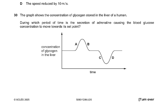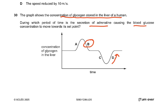Question 30: the graph shows the concentration of glycogen stored in the liver. During which period is the secretion of adrenaline causing the blood glucose concentration to move towards its set point? In period D, glucagon is causing glucose to return to its set point. The answer is B — here the blood glucose was high, and adrenaline is converting glycogen to glucose, moving it towards the set point.